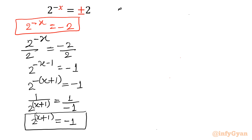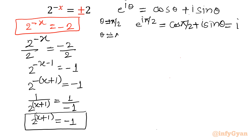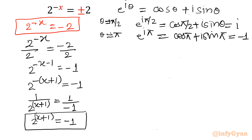Now I will use Euler's identity: e raised to the power i theta equals cos theta plus i sine theta. To find negative 1, I put theta equal to pi. Then e raised to the power i pi equals cos pi plus i sine pi, which gives negative 1 plus 0 equal to negative 1. So in place of minus 1, I will write e raised to the power i pi. This is for a particular solution only.